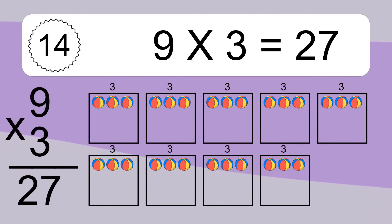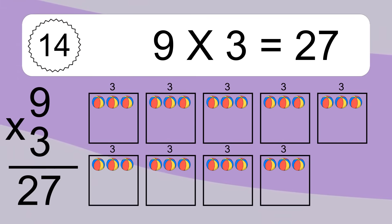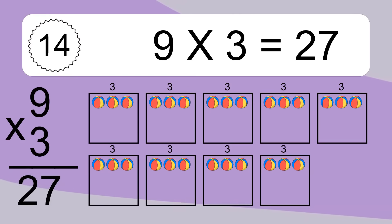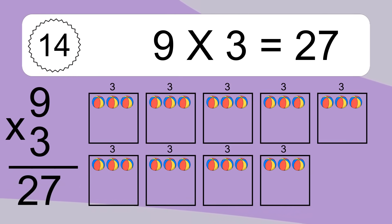9 times 3 equals what? We have 9 boxes and each box has three colorful balls inside. If you count all the balls in all the boxes together, you will have 9 times 3 balls. This equals 27 balls.